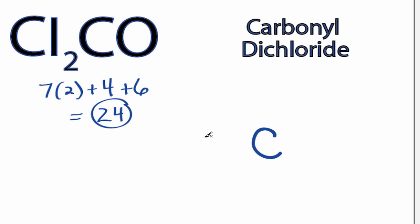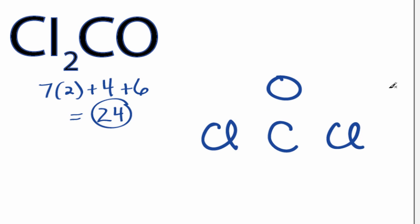Carbon is the least electronegative. We'll put that in the center. Let's put the chlorines on either side, and then we can put the oxygen on top here. We have 24 valence electrons for the Cl2CO Lewis structure.